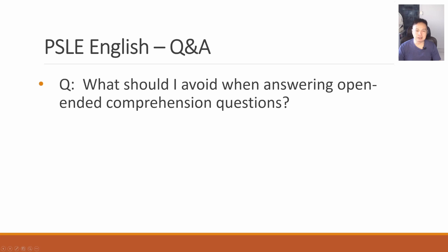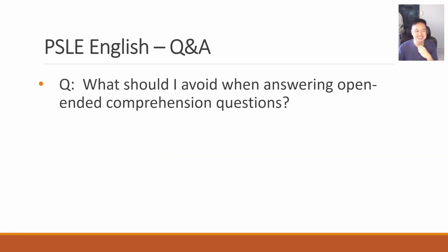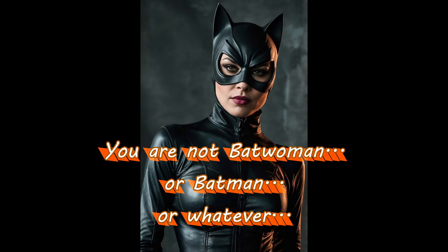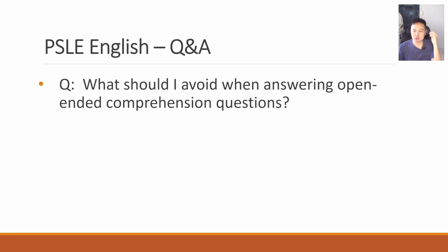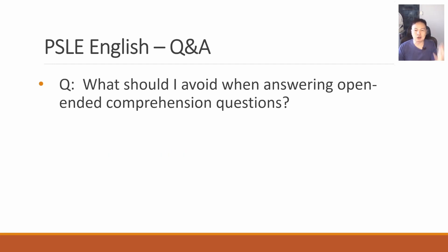What should I avoid when answering open-ended comprehension questions? One important thing students must understand is to avoid making personal assumptions. A lot of students, when they read the story, take it very personally and start to think of what they would do if they are the character — they put themselves in the shoes of the character and come up with personal responses. That's what you should not do. Your answers must always, always be based on the text. Always reference the text. Avoid giving your own assumptions, jumping to conclusions, or making certain decisions on behalf of the characters when it is not clearly stated in the passage.